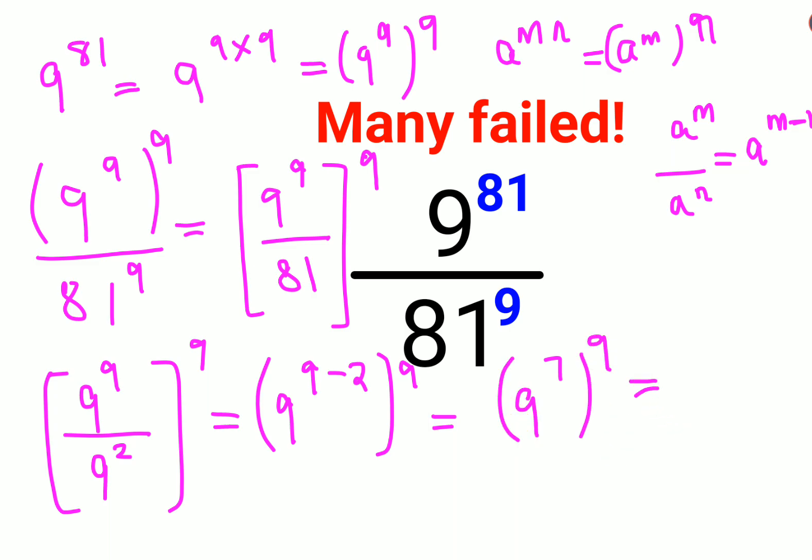Now we know that a raised to m, the whole raised to n, can be written as a raised to m times n. So this becomes 9 raised to 7 times 9, that gets you 63. So the final value for this answer is 9 raised to 63.